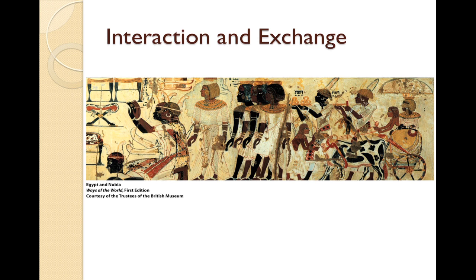In world history, trade connections commonly diffuse culture, and this was the case with Mesopotamia and Egypt. Mesopotamian culture influenced the Hebrews and Phoenicians in the Mediterranean region, while Egypt interacted with Mediterranean cultures to the north and the Nubian culture to the south. This section reviews these connections and ends with a discussion of pastoral peoples such as the Hittites and the Hyksos, who challenged states in Mesopotamia and Egypt with their superior ironworking and chariot technology — a very important recurring theme of the challenges posed by pastoral peoples and their advanced warfare.